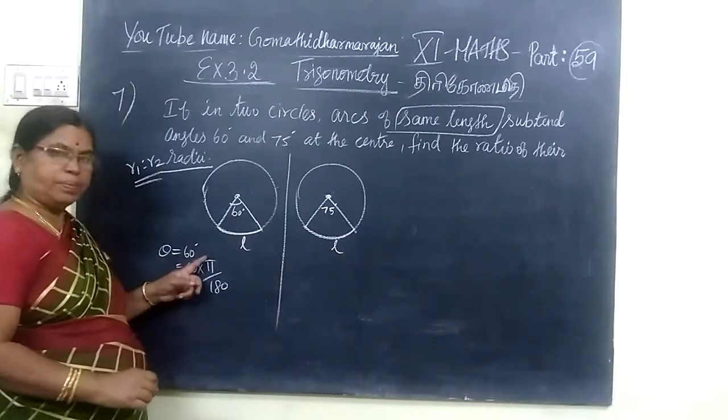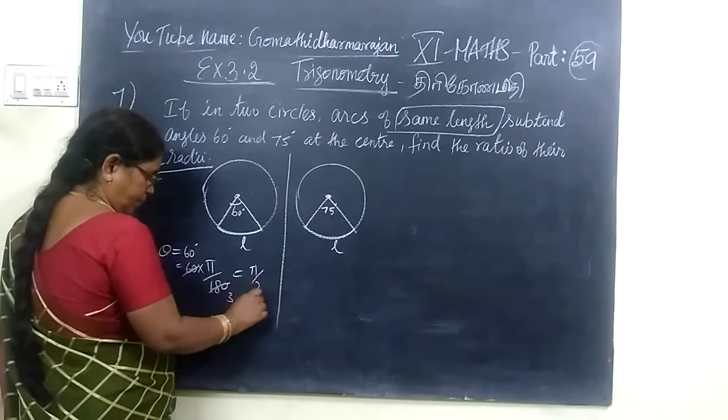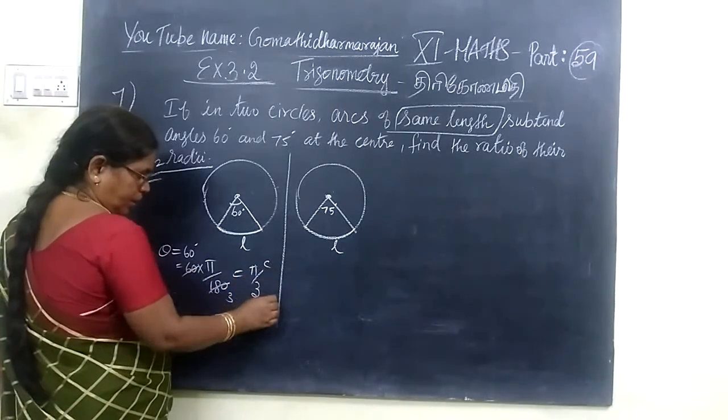60 degrees in radians: 60 times π by 180. If you cancel this, you get π by 3. That's the radian measure.